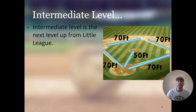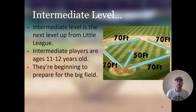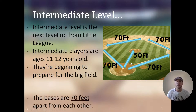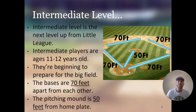Intermediate level is the next level up from Little League. Intermediate players are usually ages 11 to 12 years old, and they are beginning to prepare for the big field — the major league and high school field. The bases are 70 feet from each other and the pitching mound is 50 feet from home plate. So the bases are 70 feet and the pitcher's mound is 50 feet in intermediate level baseball.